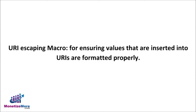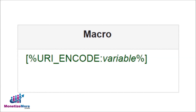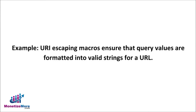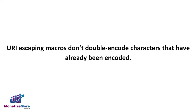When working with creative templates — not with custom third-party creatives — and you want to ensure that values inserted into URIs are formatted properly with the necessary escaping of characters such as spaces, then the URI Escaping Macro is worth exploring. If you are dynamically adding query parameters to a URL and some of those query parameters contain spaces, you can use the URI Escaping Macro to ensure that the query values are formatted into valid strings for a URL. Note that the URI Escaping Macro doesn't double encode characters that have already been encoded.